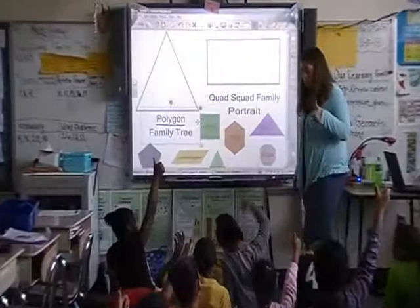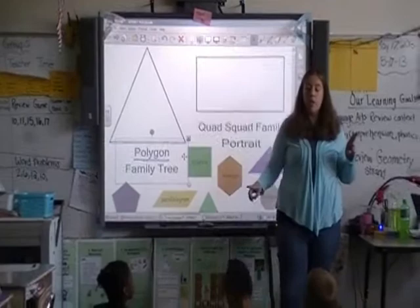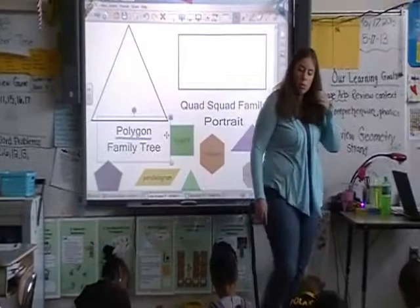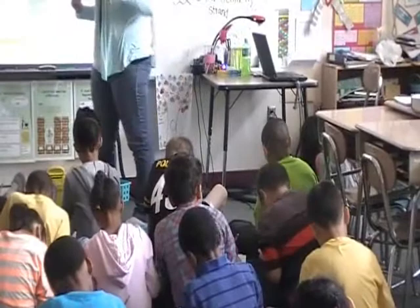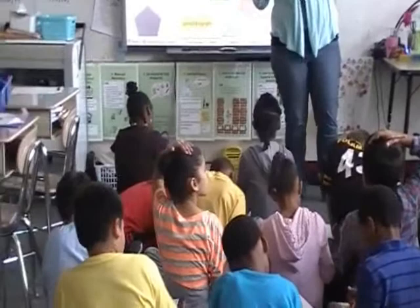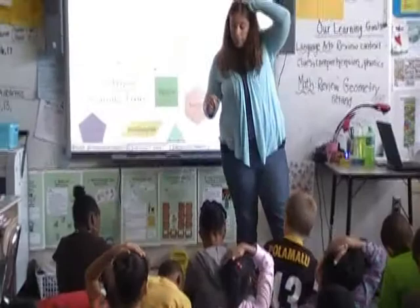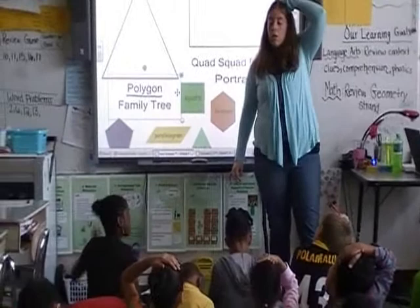Draw me two examples or two illustrations of a polygon from your conversation with your neighbor. Hand on your head when you have two illustrations of a polygon — could be anything, as long as you discussed what a polygon was. Five, four, three, two, one. Pencils down.